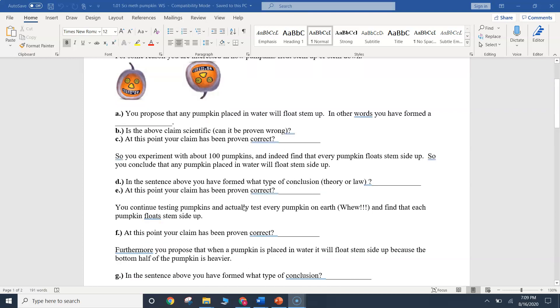Now we're going to test every pumpkin on the earth. It's a little impractical, but just bear with me. And we found that every single pumpkin on the entire planet earth, when put in water, floats stem side up. At this point, has my claim been proven correct? No. Remember, you can never prove a scientific claim to be absolutely correct, you can only strengthen it. What could possibly happen that would prove it incorrect? A pumpkin might grow tomorrow that will float stem side down. So that would prove my law incorrect.